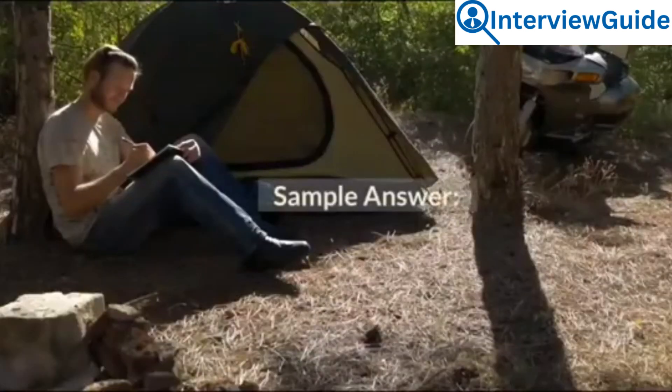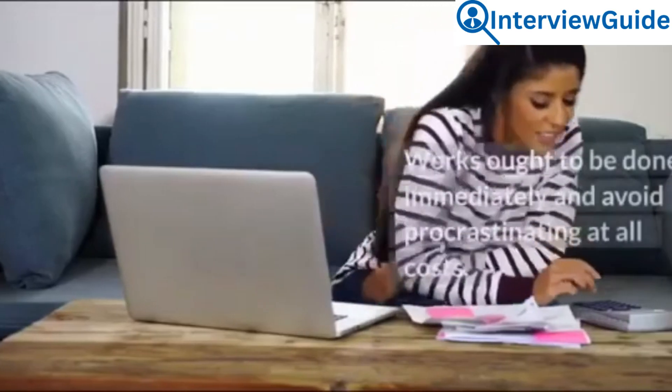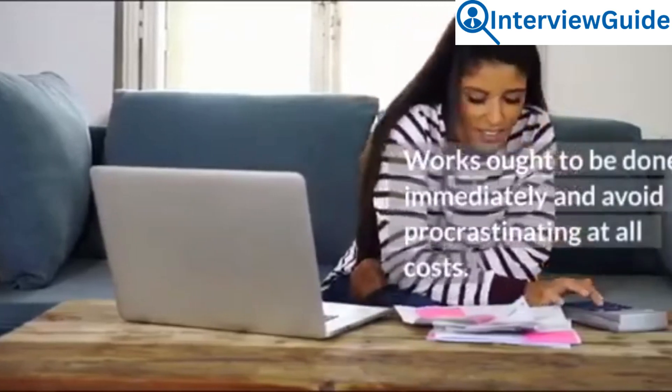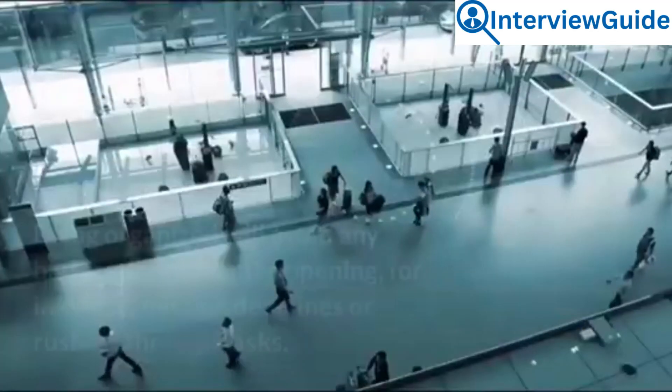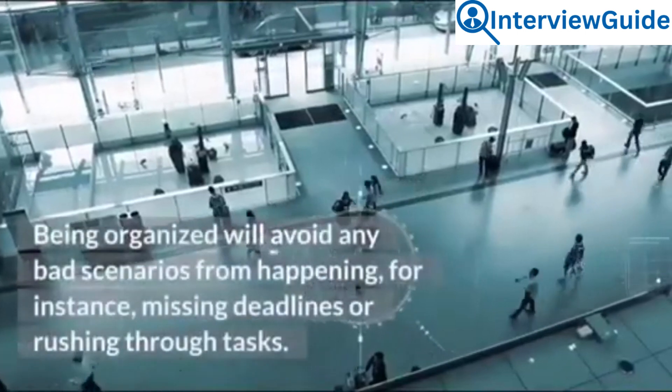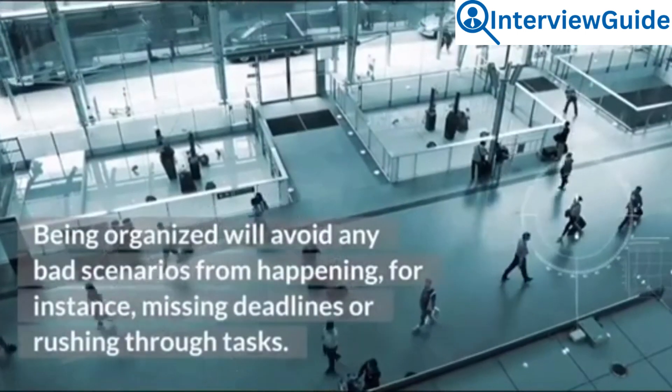Sample answer: Being organized is a crucial key to become an effective statistician. Works ought to be done immediately and avoid procrastinating at all costs. I always teach myself to jot down my goals for the short and long term. This will help me to keep on track and avoid missing any important tasks. Being organized will avoid any bad scenarios from happening, for instance, missing deadlines or rushing through tasks.